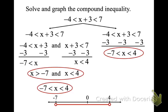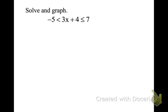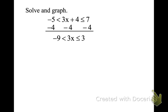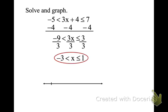You guys try the next one. Let's check our work. First, we're going to add 4 to all three parts. I get negative 9 is less than 3x, which is less than or equal to 3. Now I'm going to divide all three parts by 3. I get negative 3 is less than x, which is less than or equal to 1. I'm ready to graph: open circle at negative 3, solid circle at 1 because it's equal to, and I draw the line to connect the parts.